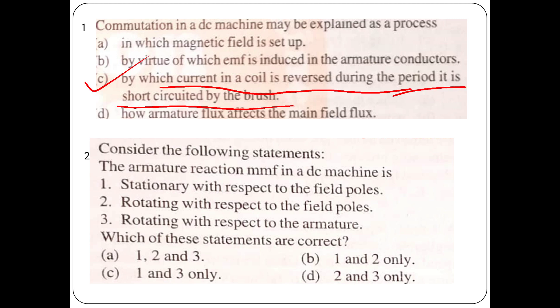Consider the following statement. The armature reaction MMF in a DC machine is: stationary with respect to field poles; rotating with respect to field poles; rotating with respect to armature; or with respect to stator. In a DC machine, the main field is stationary with respect to the stator — that is stationary with respect to field poles. The correct statements are 1 and 3.